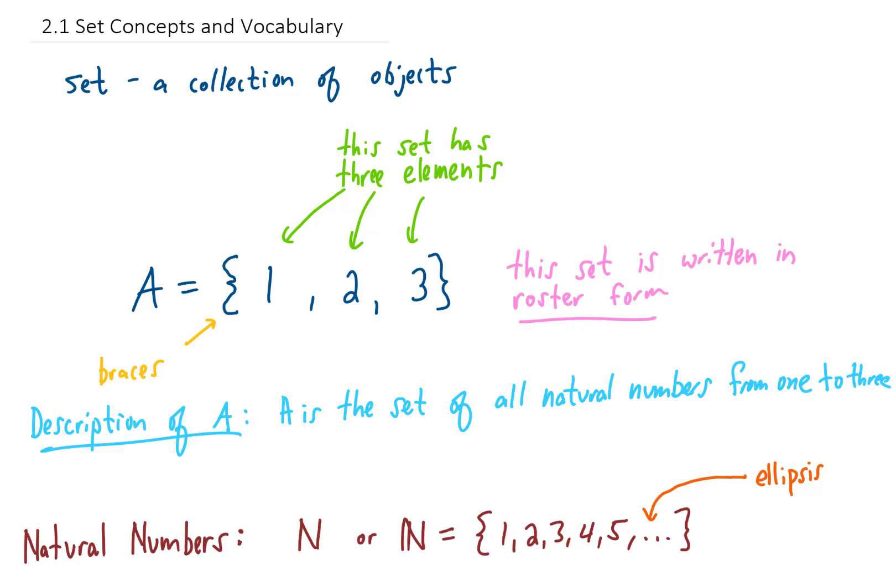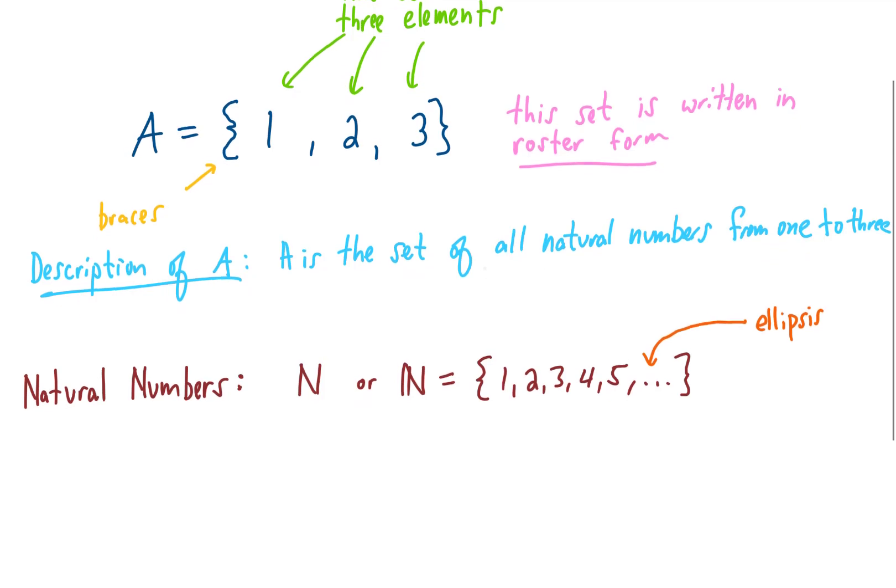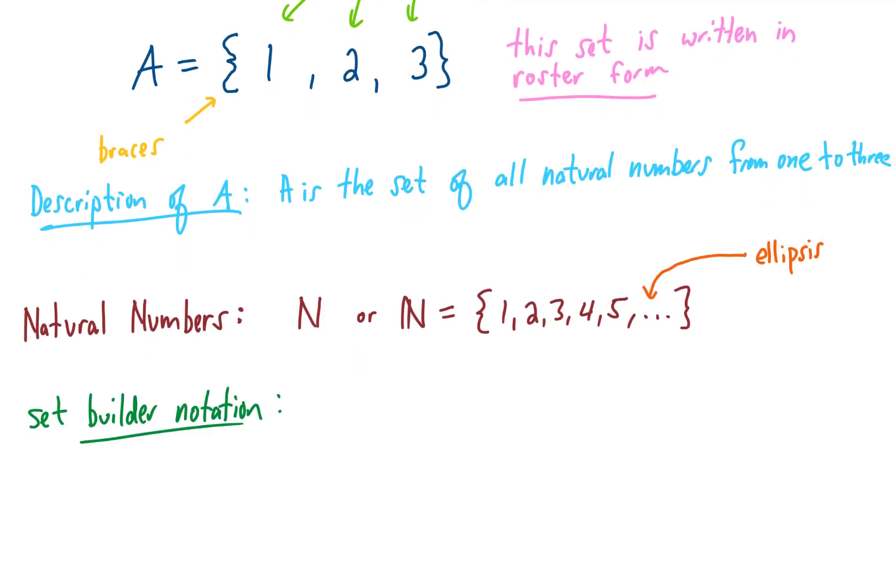So we have roster form, description form, and we have one more way to describe a set called set builder notation. To use set builder notation, we're going to use this little symbol right here that means 'an element of'. If we're going to write the set A from above, we would say A is the set of all x values. Then we put this vertical line here which means 'such that', then we describe the values in the set.